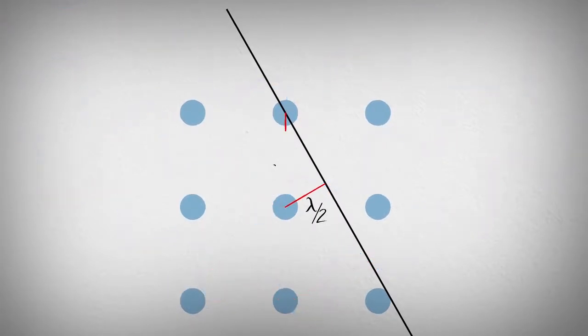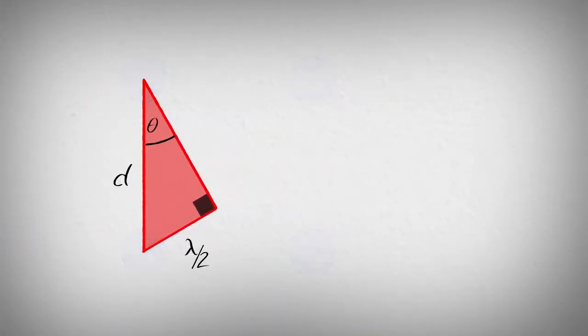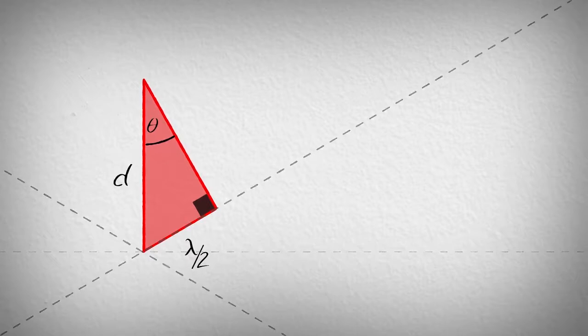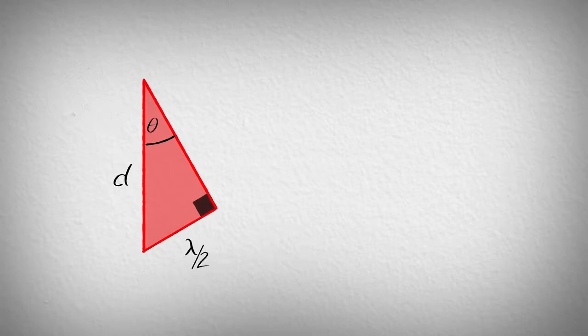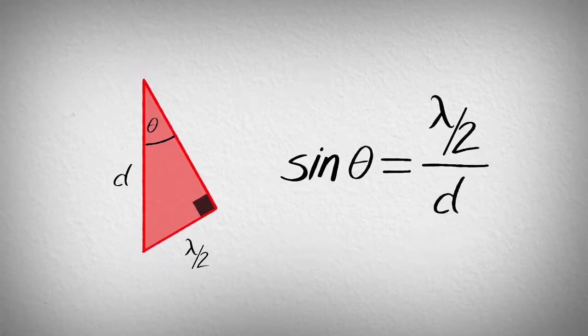The exact angle at which diffraction occurs can be determined from the red triangle. The angle at the top is theta, half the angle between the incident and scattered beams. The long side is the distance between the atomic planes, and the short side we know is one half of a wavelength. The relationship between the diffraction angle and the spacing between the atoms can be determined by applying the sine function.